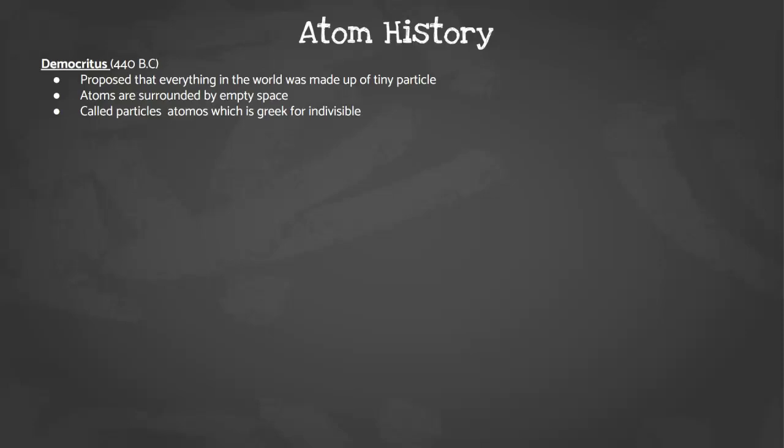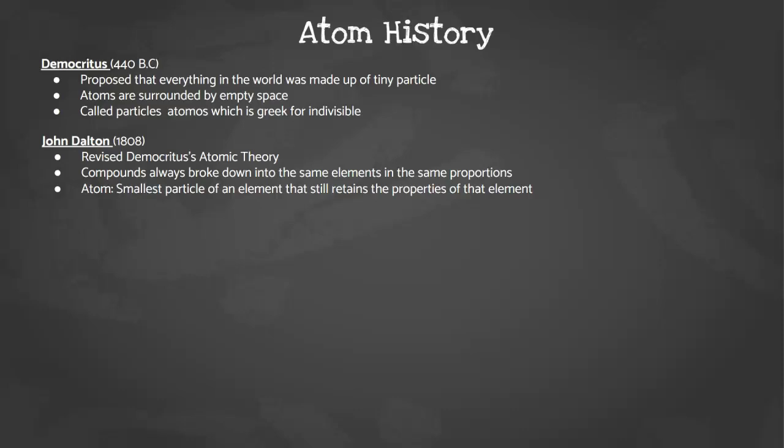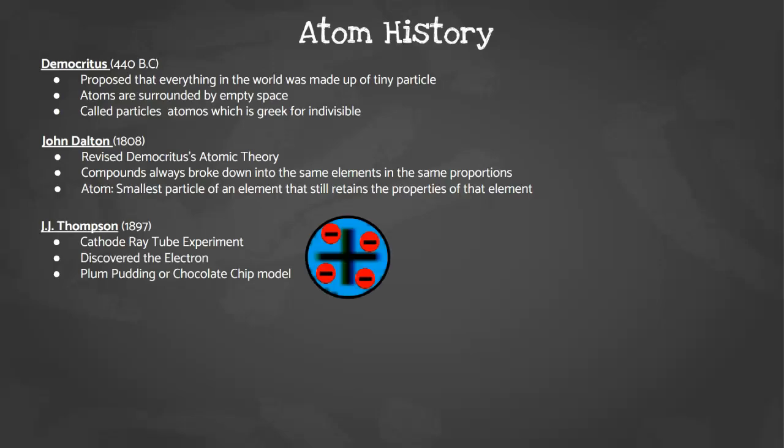The next big development for atoms didn't happen until 1808 with John Dalton. He revised Democritus' atomic theory and actually came up with our definition of atoms. He also gave us the theory for compounds, which is that they always broke down into the same elements in the same proportions. In 1897, we've got our first model from J.J. Thompson. He did the cathode ray tube experiment, discovered the electron, and created the plum pudding or chocolate chip model, where you have a positively charged medium and a bunch of free-floating, negatively charged electrons.